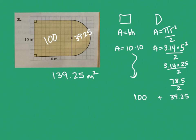Page 279 gives another example — a banquet room being carpeted — and walks through the same process: identify shapes, write formulas, fill in dimensions, and calculate. That's all this lesson is about: identify shapes, match formulas, fill in dimensions, and go. Give it a shot — I believe you'll do great.